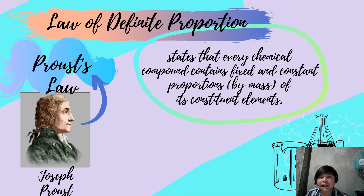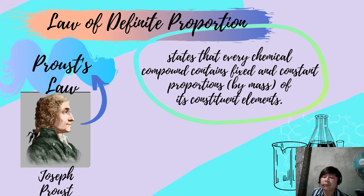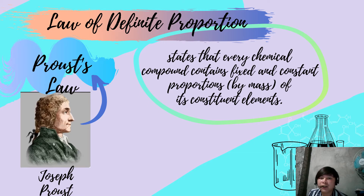The next basic law of matter is the law of definite proportion. It states that every chemical compound contains fixed and constant proportions by mass of its constituent elements. This law was put forth in 1797 by the French chemist Joseph Proust, and hence it is also referred to as Proust's law.